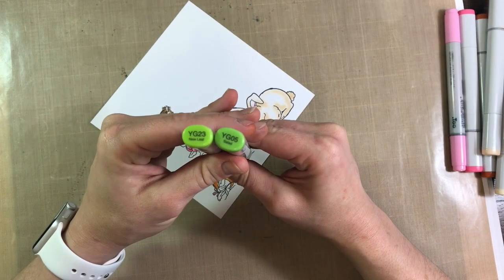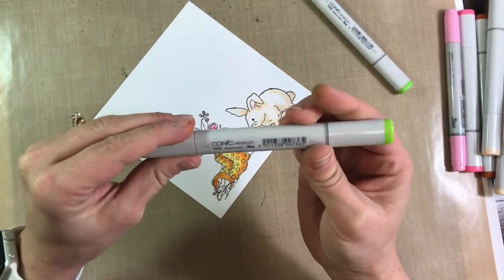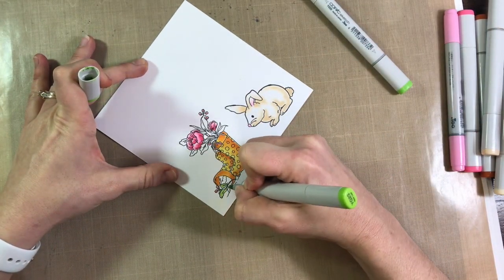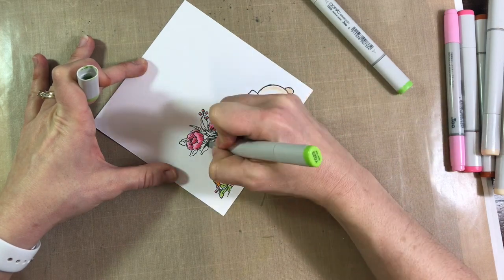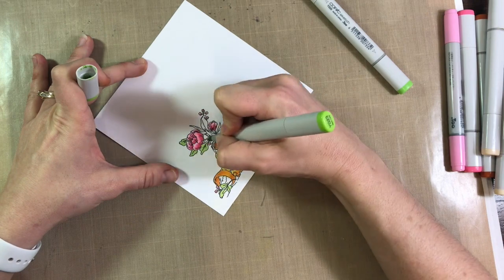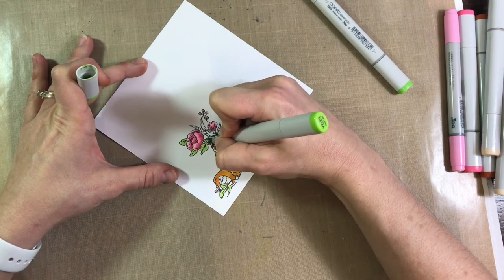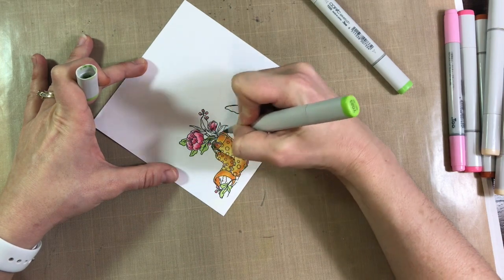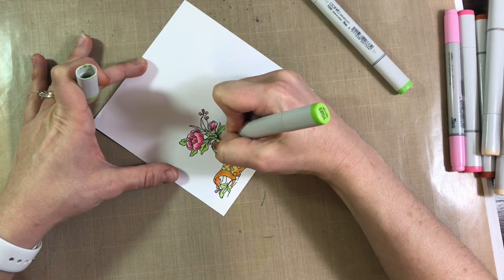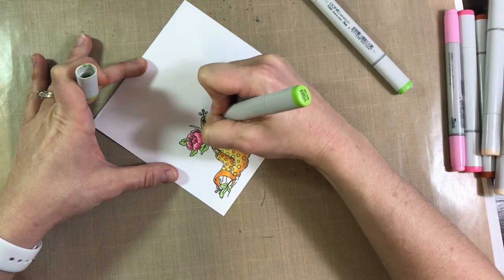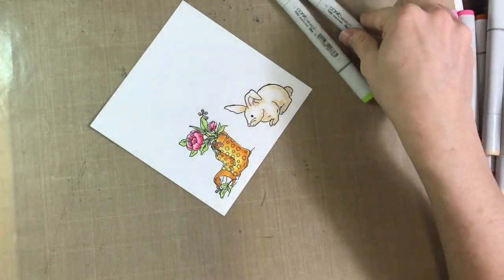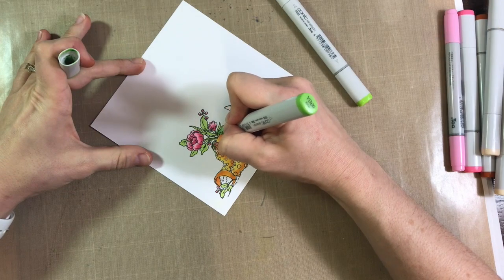And those greens would be YG23 and YG05. I started with my YG23 as my lighter color and went over it with the YG05, which isn't typically what I would do because of the color families, the way they work. But that YG05 is a bit darker. So I thought, let's give it a try. It's not as stark as the last time I colored this image, but I ended up liking it as well.